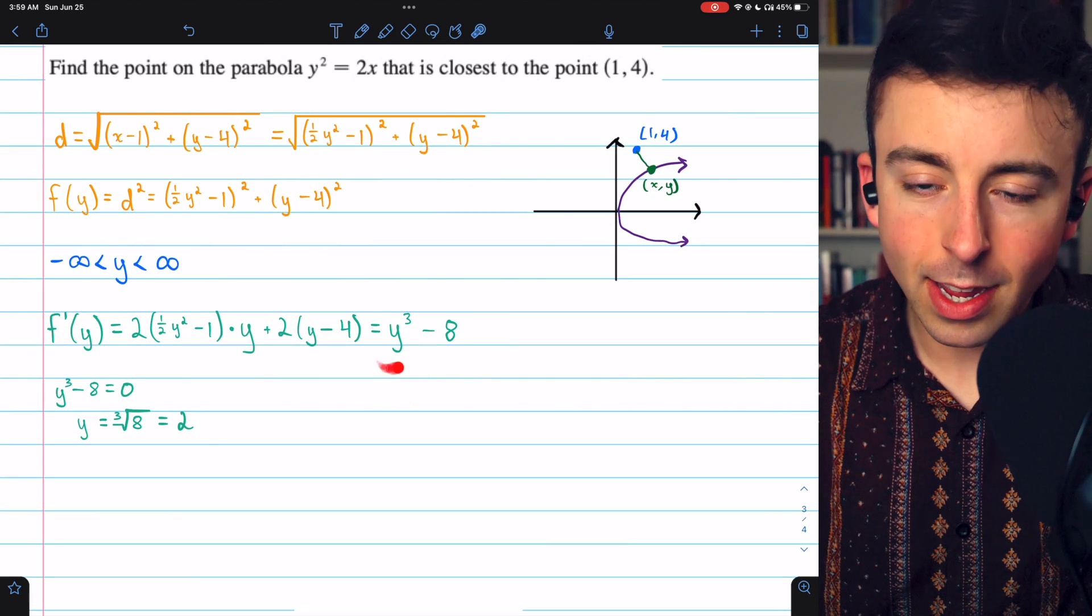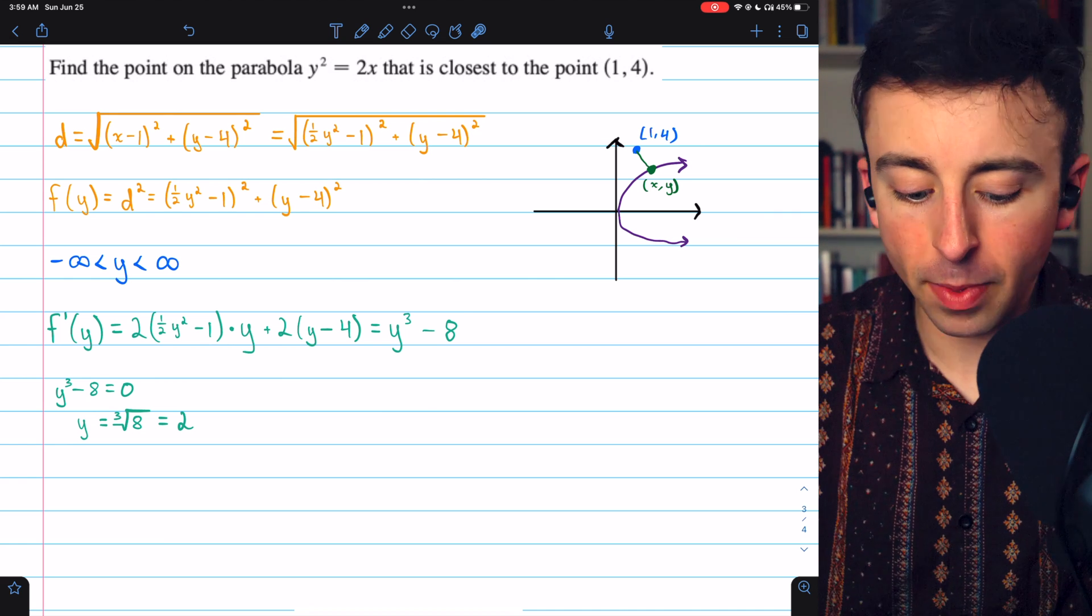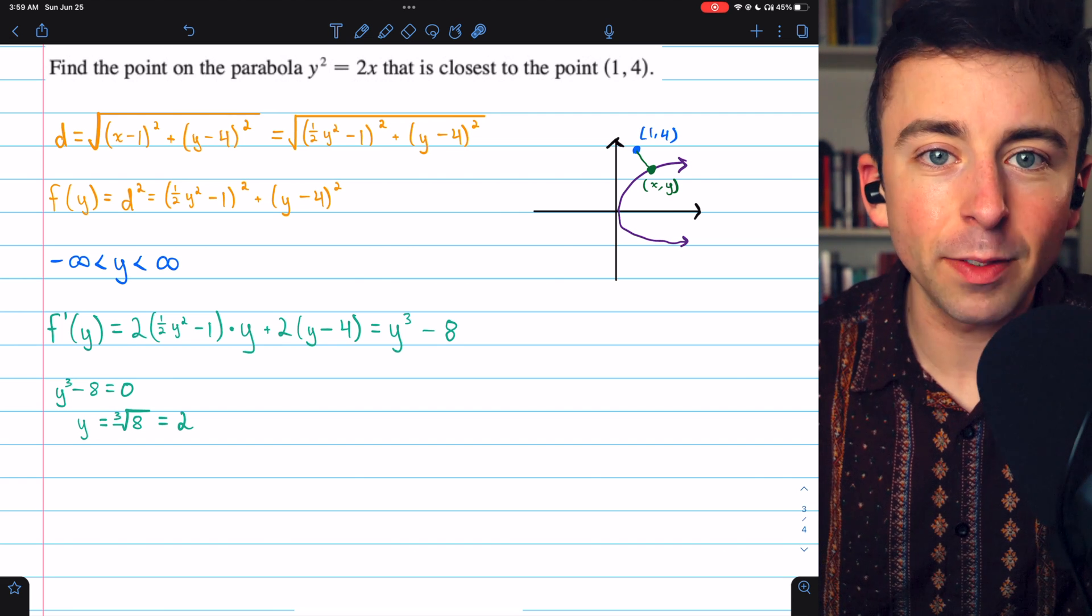Y cubed minus 8 is defined everywhere, so the only critical points will be where this equals zero. Setting it equal to zero, we find that y equals positive 2.